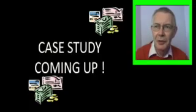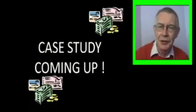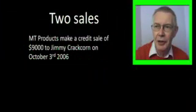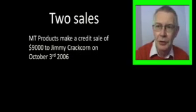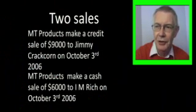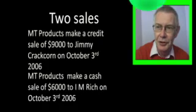Here is a typical situation. MT Products make a credit sale for $9,000 to Jimmy Crack Corn on October 3, 2006. MT Products also make a cash sale of $6,000 to IM Rich on October 3, 2006.